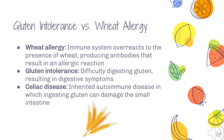One of the most common allergies and intolerances you hear about involves gluten and wheat. There's an important distinction between a wheat allergy, gluten intolerance, and celiac disease, although they are sometimes confused. A wheat allergy is an immune reaction to the presence of wheat that produces antibodies triggering an allergic reaction. A gluten intolerance is difficulty digesting gluten, resulting in digestive symptoms like stomach pain or bloating — it's not an allergic reaction, and the person could still consume gluten but might have side effects. Celiac disease is a serious autoimmune condition in which ingesting gluten can damage the small intestine.